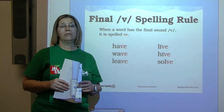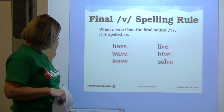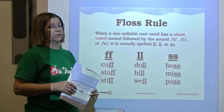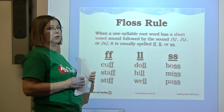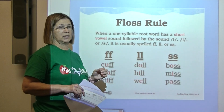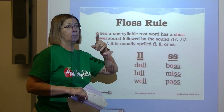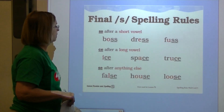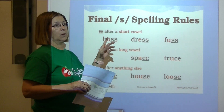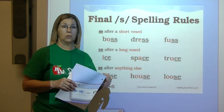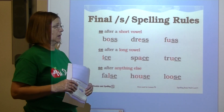When spelling the v sound at the end of a word, we always spell that with the letters v-e. The floss rule says when a one-syllable root word with a short vowel sound is followed by the sound f, l, or s, we use twin consonants: ff, ll, or ss most of the time. When spelling ss at the end of a word: use ss after a short vowel because of the floss rule, ce after a long vowel, and se after anything else.